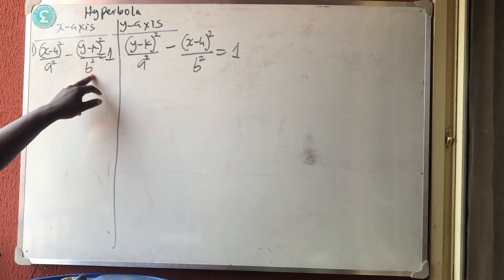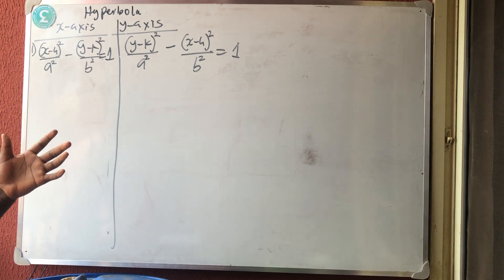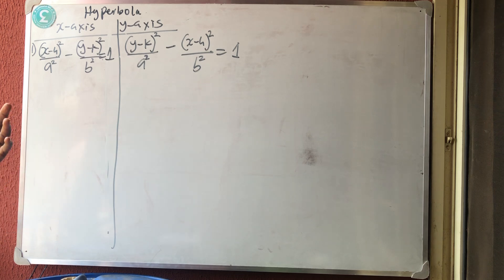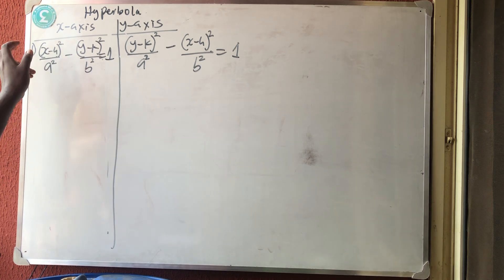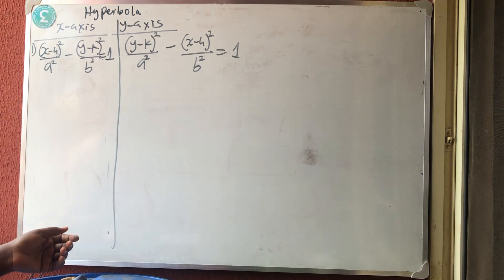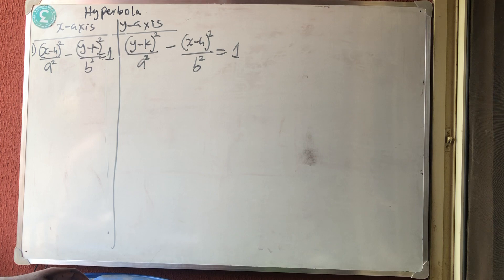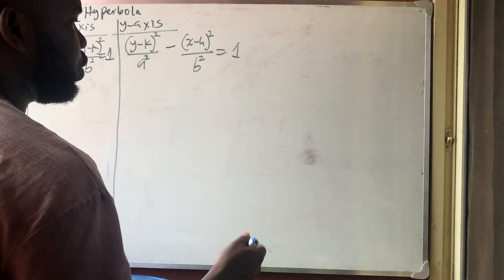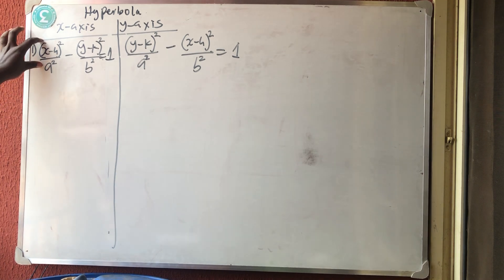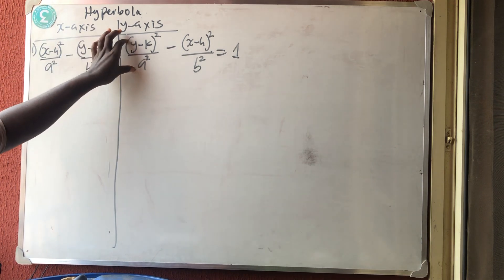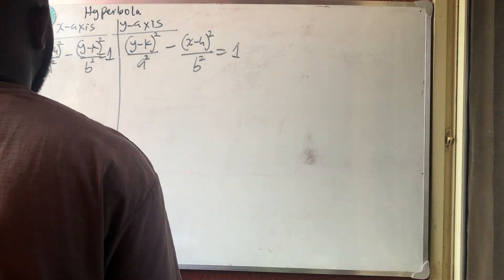Unlike in ellipse, where a is always greater than b to tell us the orientation, here a can be greater than b, b can be greater than a, or they can both be equal. There is no condition here for a and b. We know the orientation from the sign: the side that is positive tells you the direction — x positive means parallel to x-axis, y positive means parallel to y-axis.